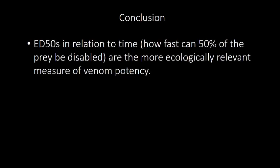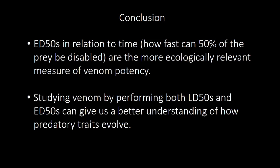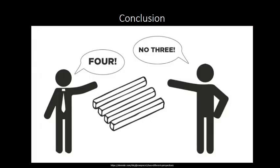To conclude, ED50s in relation to time — how fast 50% of the prey are disabled — are the more ecologically relevant measure of venom potency, and studying venom by performing both LD50 and ED50 potency experiments can give us a better understanding of how predatory traits evolve, quite like these gentlemen needing both perspectives to get the whole picture.